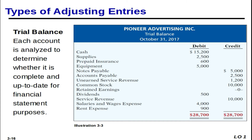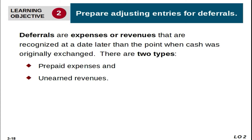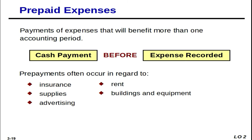So what we do is make an adjusting entry at the end and we can get away with it. Types of adjusting entries — again, deferrals: for expenses, you paid for the expense but have not used it yet. For revenues, you received the cash but have not provided your performance obligation — the delivery of the product or the provision of the service you promised.